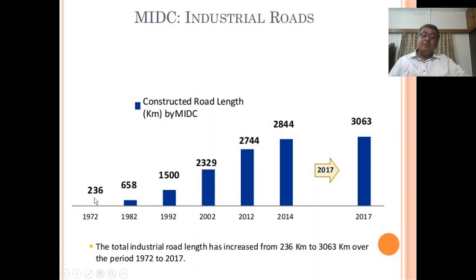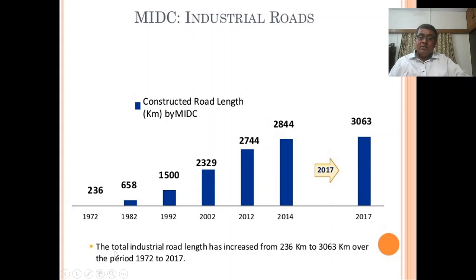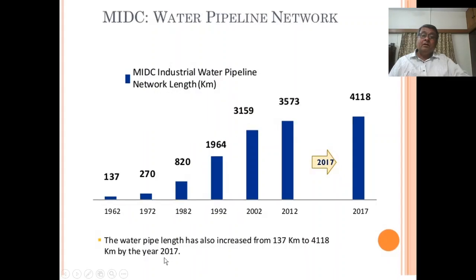In terms of industrial roads, in 1972 MIDC had 236 kilometers of roads; in 1982 it was 658 km; in 1992 it was 1,500 km; in 2002 about 2,329 km; in 2012 it was 2,744 km; in 2014 it was 2,844 km; and by end of 2017 it had 3,066 km. Now it has crossed nearly 4,000 kilometers of roads.